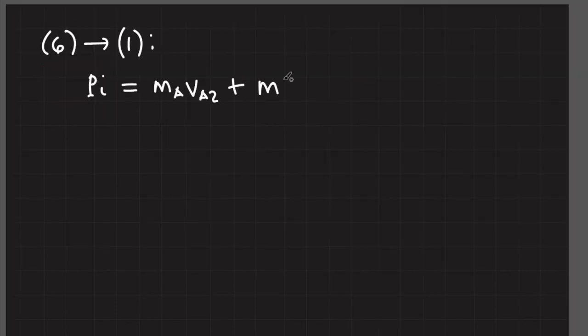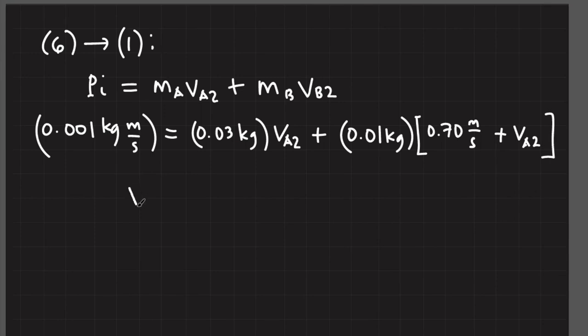Plug equation 6 to equation 1 and we obtain V sub A2. The final velocity of ball A is negative 0.15 meters per second. It is negative, which means that the result is consistent with the fact that ball A is going to the left after it collides with ball B.